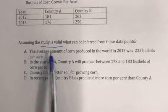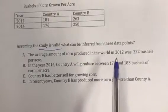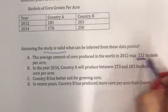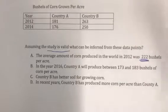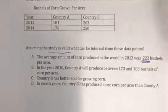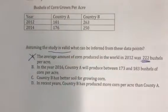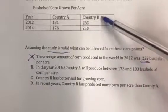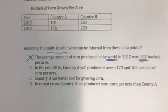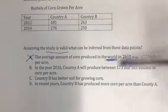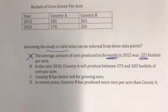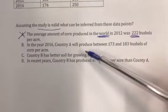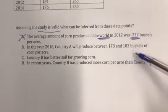Option A says the average amount of corn produced in the world in 2012 was 222 bushels per acre. This came from taking all the numbers, adding them up, and dividing by four — that's how we find an average. This is not something we can infer, because this only looks at two particular countries, Country A and Country B. This inference would be about the entire world, leaving out many countries. So not option A.